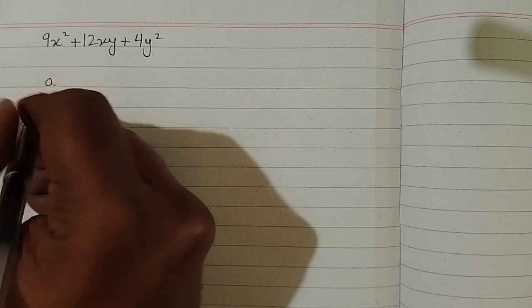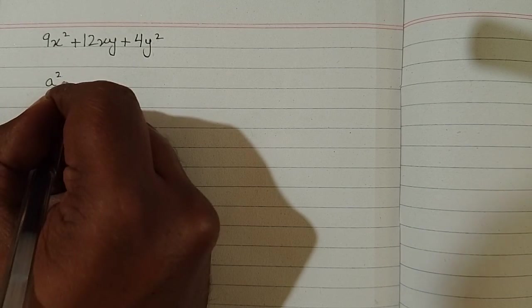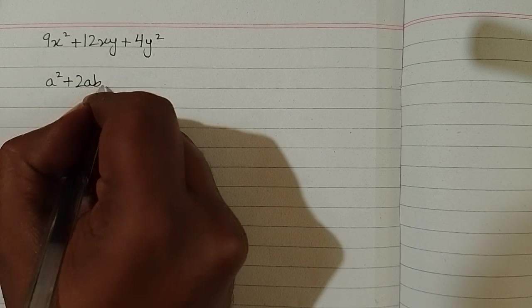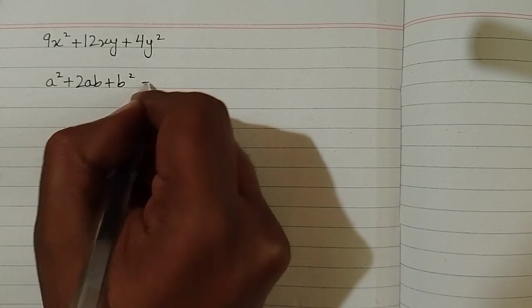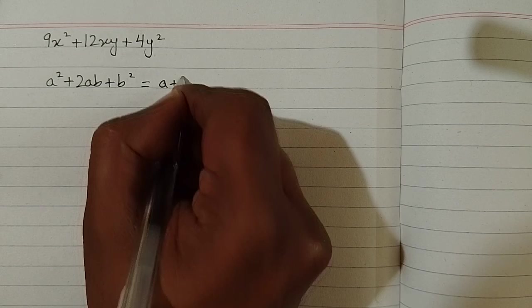So we have an algebraic identity: a square plus 2ab plus b square is equal to a plus b whole square.